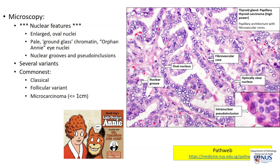Here is a high magnification picture of a pseudo-inclusion. What we see is a little island of cytoplasm that is surrounded by a nuclear membrane. There are several variants of PTC. The commonest is the classical variant of PTC, which forms nice, slender papillary structures with fibrovascular cores.